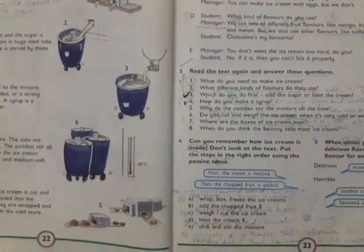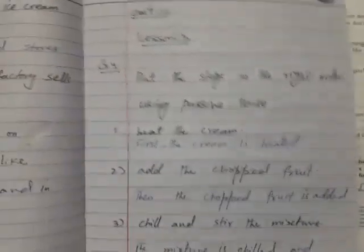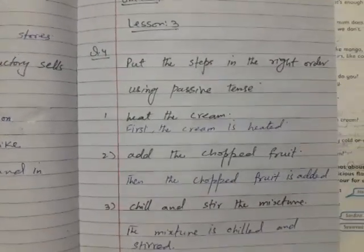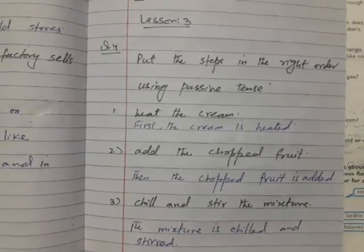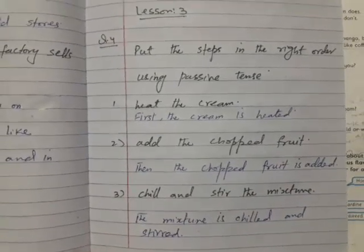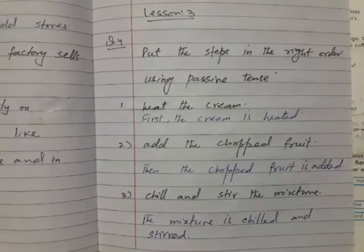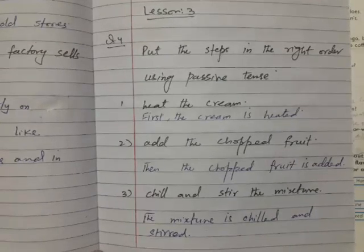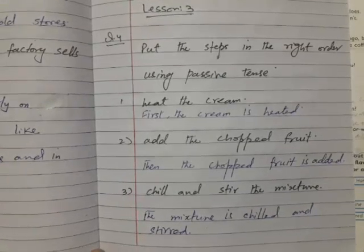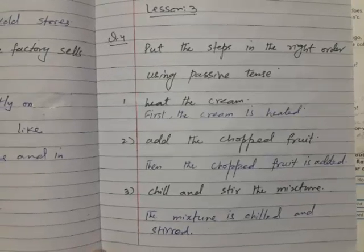Question three is done. Now come to question four. I have done this on the copy. Again you have to prepare the page like this: mention unit number, lesson, and then you have to write the question. Put the steps in the right order using passive tense. Number one, heat the cream. We wrote it properly like first the cream is heated. Then second is add the chopped fruit. We have changed it like then the chopped fruit is added. Chill and stir the mixture. The mixture is chilled and stirred.